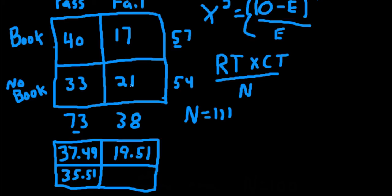And then finally for the last cell, no book and failing the class, 38 times 54, divided by 111. We'll get 18.49.